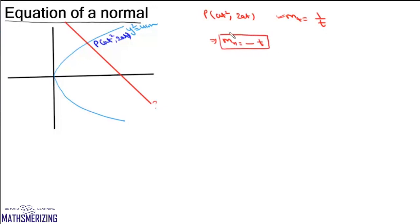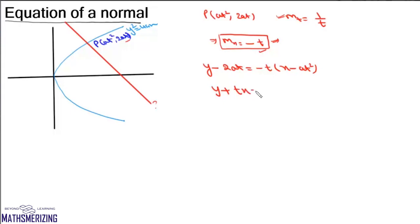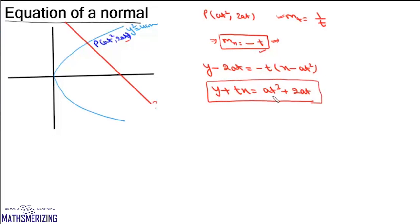At any point P on this parabola, the slope of normal is -t. We have the slope and also the point, so we write the equation as y - 2at = -t(x - at²). This simplifies to y + tx = at³ + 2at. So the equation of any normal to the parabola y² = 4ax will be of the form y + tx = at³ + 2at, where t is the parameter of the point from which this normal is drawn. We can also write this equation in terms of slope.